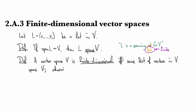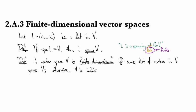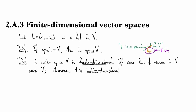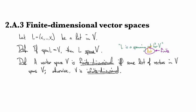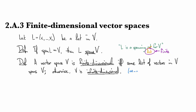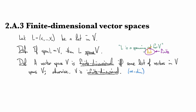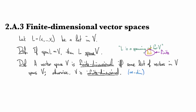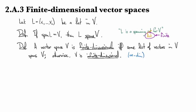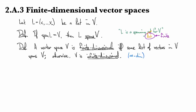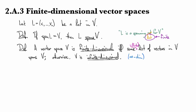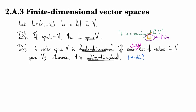Otherwise, if it's not finite dimensional, it's called infinite dimensional — I'll usually write this with this notation here for short. Just for emphasis, let me write finite here to emphasize that that's part of the definition of list.